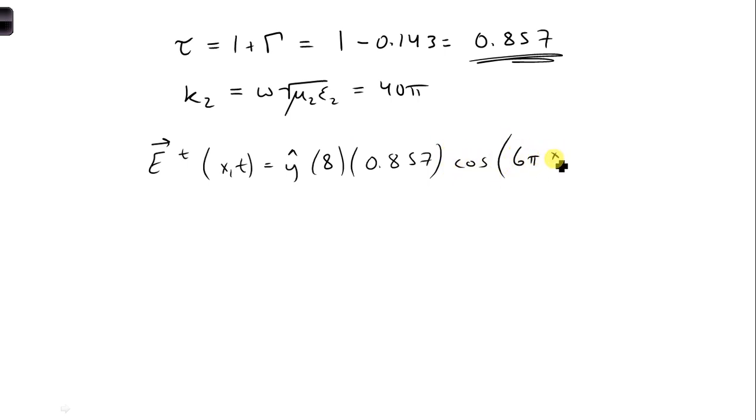Cosine 6 pi times 10 to the 9th t, and it's propagating again in the positive x direction, so we're going to have minus K, which is 40 pi, x.